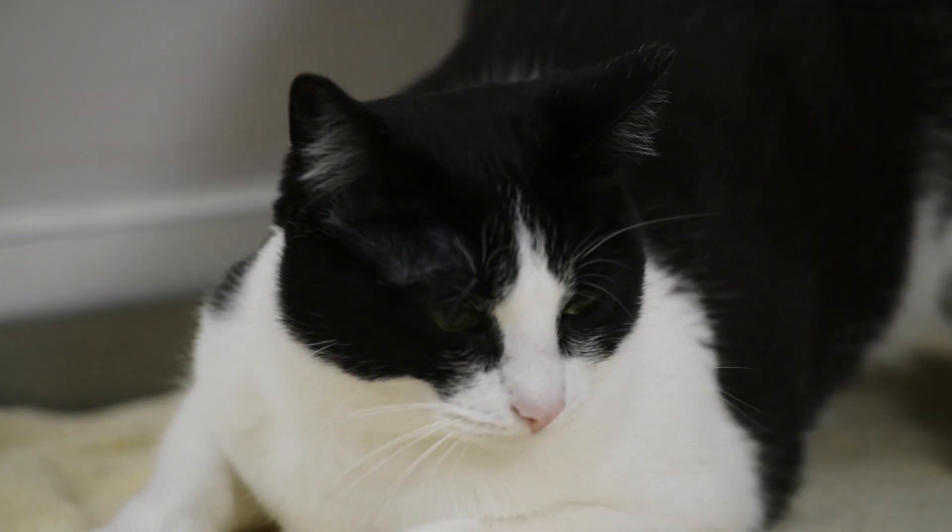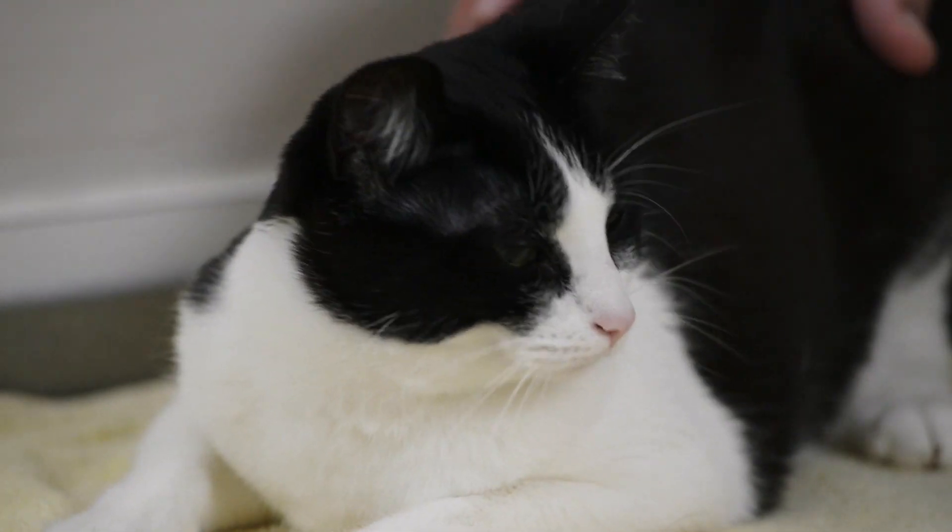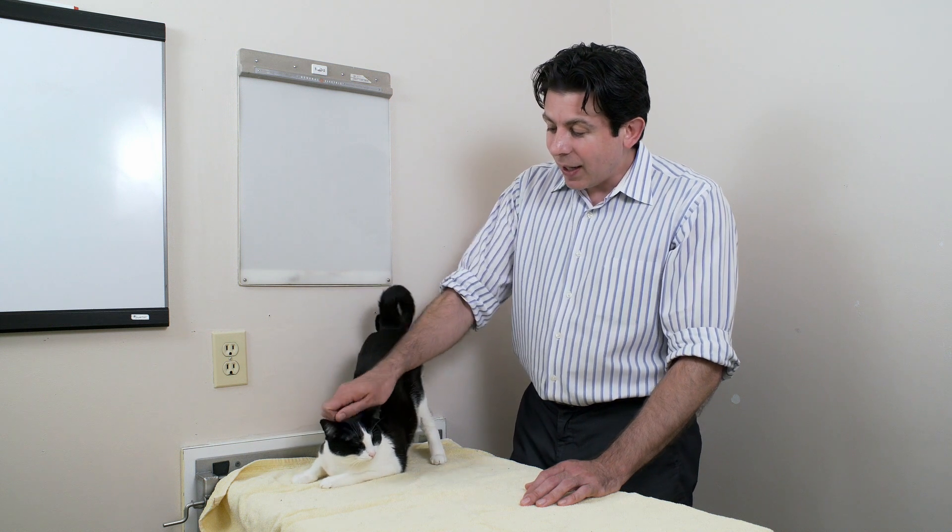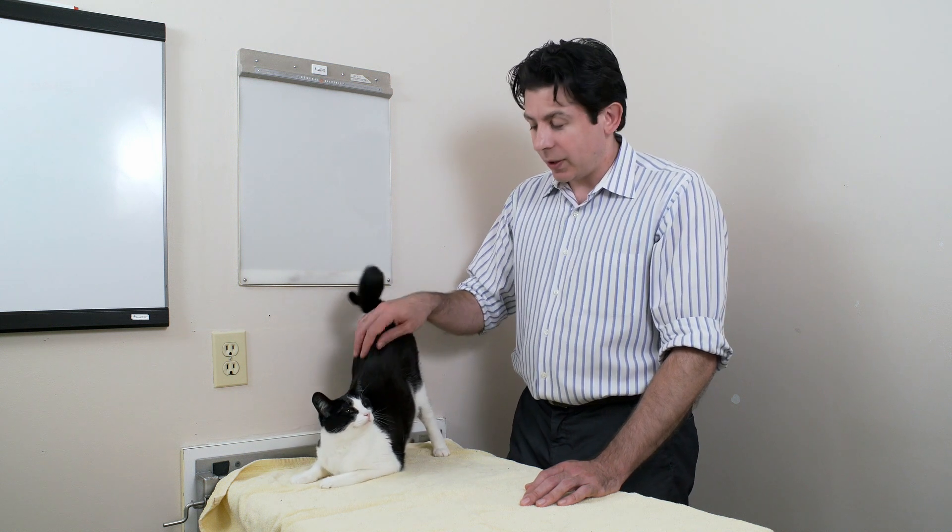Like a coyote. They're not top of the food chain animals. They're mid food chain predators, and they have to really hide it when they're sick.